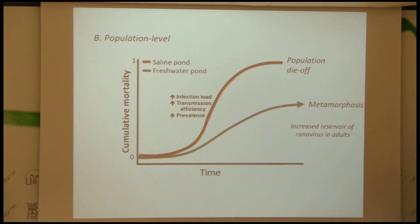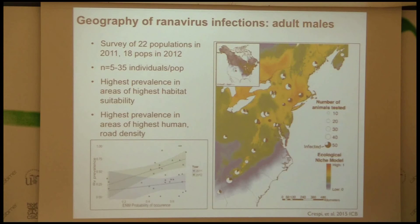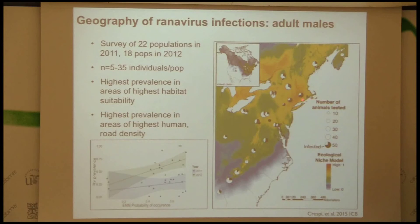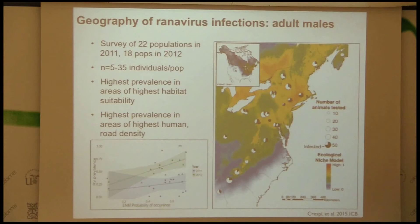It increases the reservoir of ranavirus in adults, creating a cycle of more ranavirus prevalence where there are more roads and more salt. Across the range of wood frogs in the east, the highest ranavirus prevalence in adults with sublethal infections was correlated with what is also the highest density of roads. Unfortunately, wood frogs' best habitat is also where there are the most people. There's about 70% prevalence of adults infected with ranavirus in the populations we were studying — higher than outside the edges of this range.